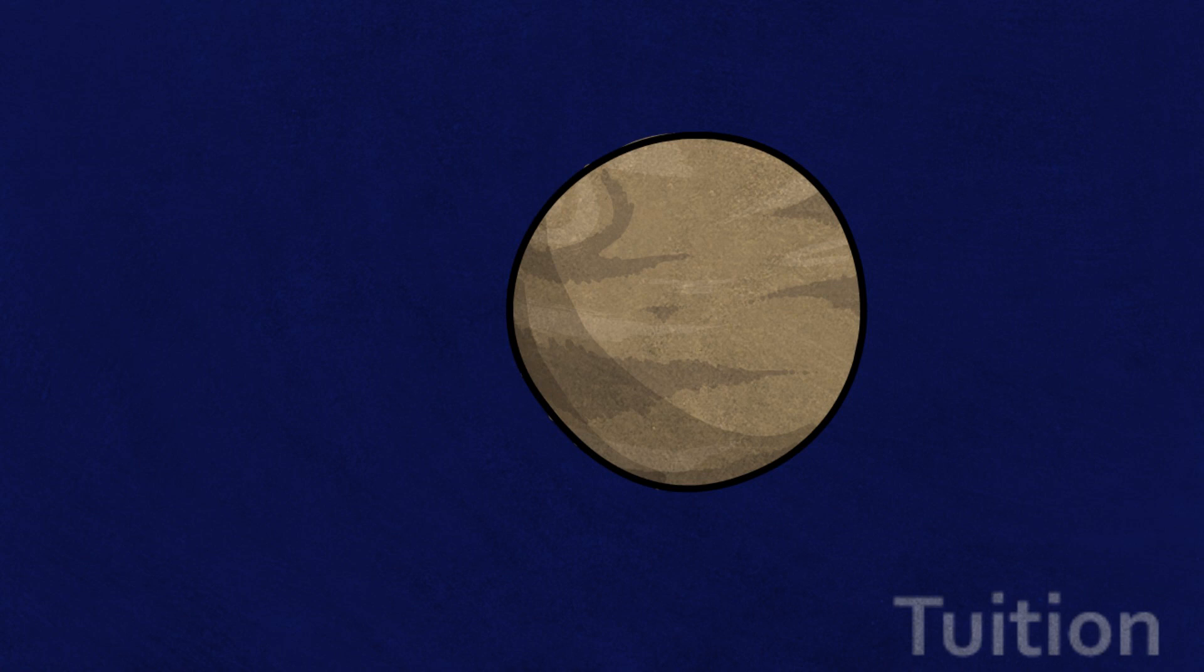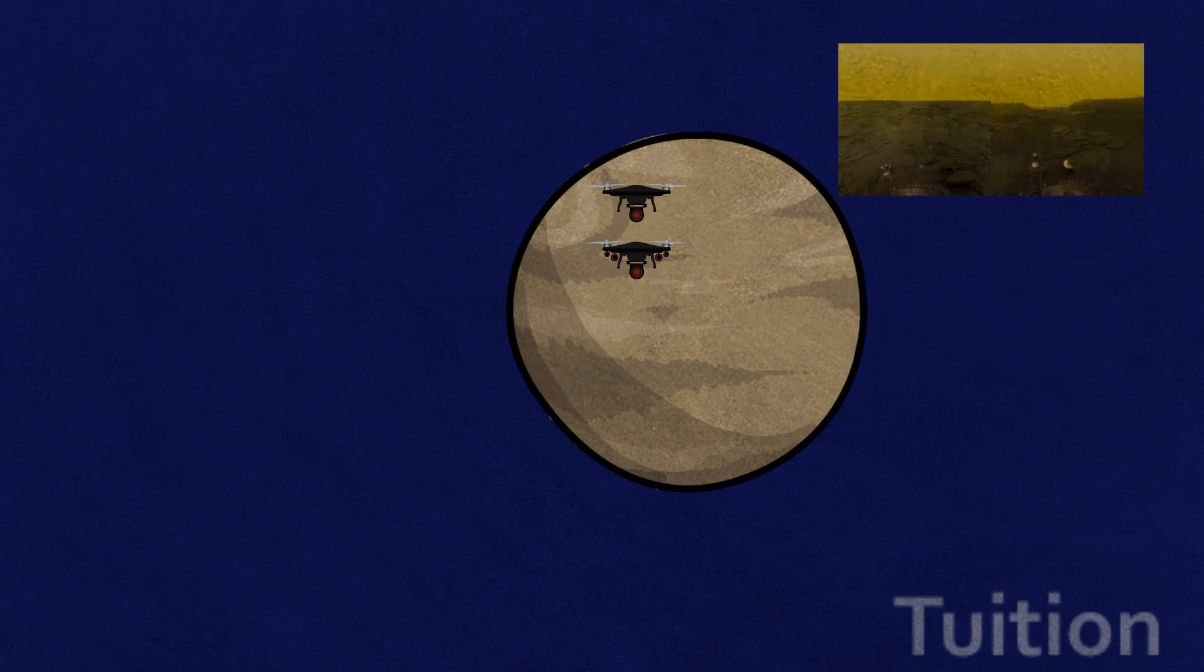And if you did, you'd be wrong. The Soviets sent a series of spacecrafts called the Venera which parachuted down through the atmosphere and returned images of the surface of Venus.